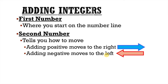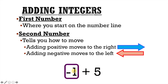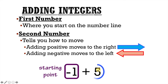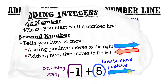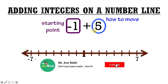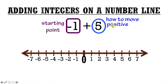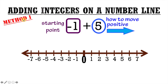Let's take a look at the following example: negative 1 plus 5. What's our first number? That's negative 1, and that's going to be where we start on the number line. Our second number is 5, and since it's our second number, it tells us how to move. Is this 5 positive or negative? It's a positive value, which means we're going to move to the right. There are two methods I use for adding integers on a number line. Method 1 is called the hop — it's really quick and easy, and it tells us our starting point, how we move, and our final answer, the sum.